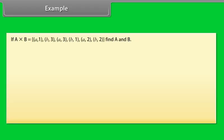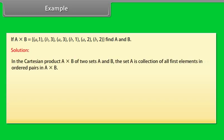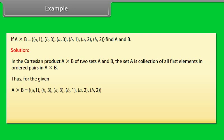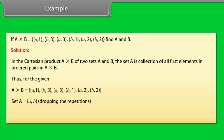Example: If A × B = {(a,1), (b,3), (a,3), (b,1), (a,2), (b,2)}, find A and B. Solution: In the Cartesian product A × B, set A is the collection of all first elements in the ordered pairs. Thus, A = {a, b} (dropping repetitions) and B = {1, 2, 3}, the set of all second elements.